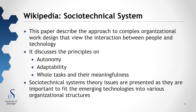The first paper is the socio-technical system from Wikipedia. It describes the approach to complex organizational work design that views the interaction between people and technology. It discusses principles on autonomy, adaptability, and whole tasks and their meaningfulness. The socio-technical system theory is presented as important for fitting emerging technologies into various organizational structures.